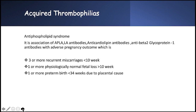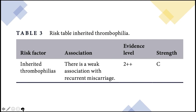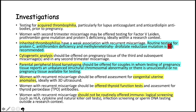Acquired thrombophilia in recurrent miscarriage is usually antiphospholipid antibody syndrome, encompassing antiphospholipid antibodies, lupus antibodies, anti-cardiolipin antibodies, and anti-beta-2-glycoprotein-1 antibodies. Adverse pregnancy outcome in the guideline is defined as three or more recurrent miscarriages under 10 weeks, one or more morphologically normal fetal losses over 10 weeks, or one or more preterm births before 34 weeks due to placental cause. Table 3 shows that inherited thrombophilias have only a weak association with recurrent miscarriages, with evidence level 2++.